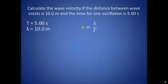So calculate the wave velocity if the distance between wave crests is 10.0 m and the time for one oscillation is 5.00 s. We are asked to find velocity, which we know is either wavelength over period or wavelength times the frequency. Since we are given the time for one oscillation is 5 seconds, this is the period. So wavelength over period it is. And we end up with a wave velocity of 2.00 meters per second.